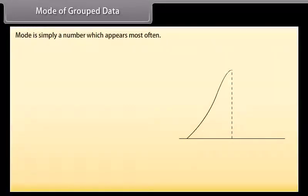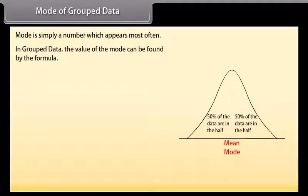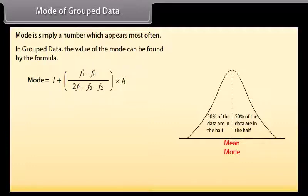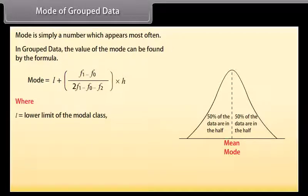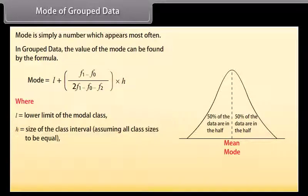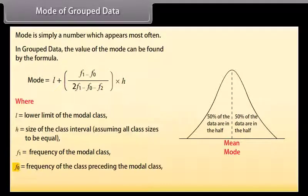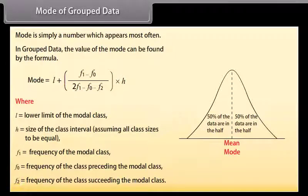Mode of grouped data: Mode is simply the number which appears most often. In grouped data, the mode is found using the formula: L plus [(f1 minus f0) divided by (2f1 minus f0 minus f2)] multiplied by h. Where L is the lower limit of the modal class, h is the class size, f1 is the frequency of the modal class, f0 is the frequency of the class preceding the modal class, and f2 is the frequency of the class succeeding the modal class.